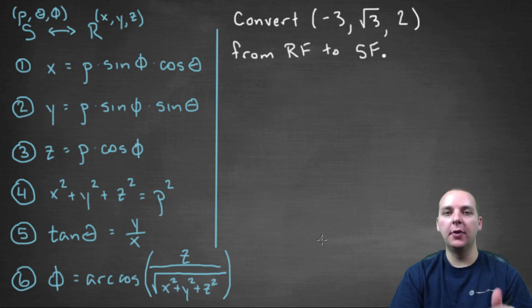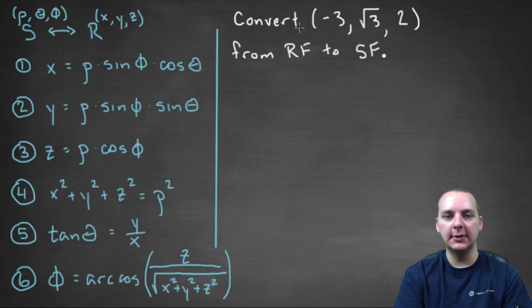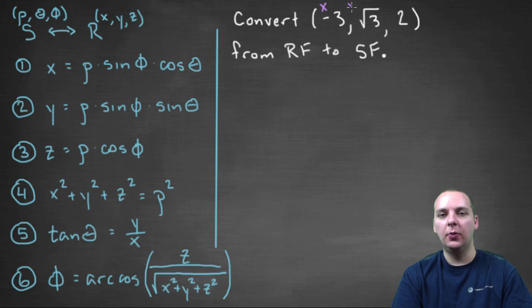Alright, in this exercise we're being asked to convert a point, negative three root three comma two, from rectangular form into spherical form. And just because space is limited, I'm going to abbreviate rectangular form as RF and spherical form as SF. So if this is rectangular form, that means negative three is x, root three is y, and the two is z.